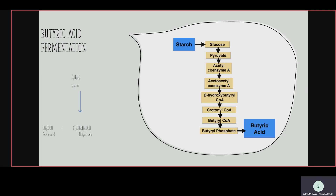The pathway starts with glucose, then pyruvate, then acetyl-CoA, acetoacetyl-CoA, beta-hydroxybutyryl-CoA, crotonyl-CoA, butyryl-CoA, butyryl phosphate, and finally butyric acid. Coenzyme is also used cyclically in this pathway — added when pyruvate converts into acetyl-CoA, then removed when butyryl-CoA converts into butyryl phosphate, then used again — similar to what we saw in propionic acid fermentation.